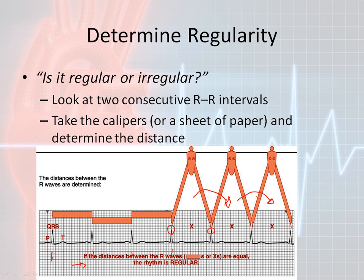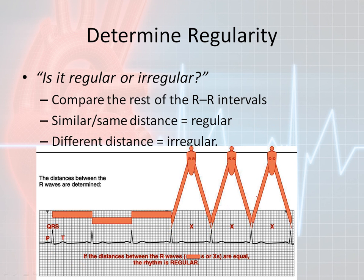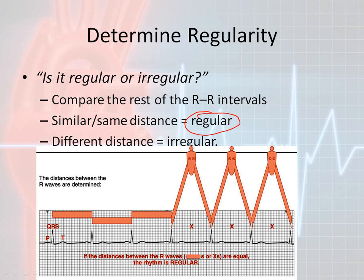If the calipers are all falling in the same or similar distance, then it's actually considered a regular type rhythm. If they're considerably different, then it's actually considered an irregular rhythm.